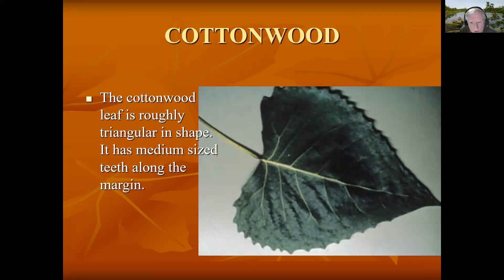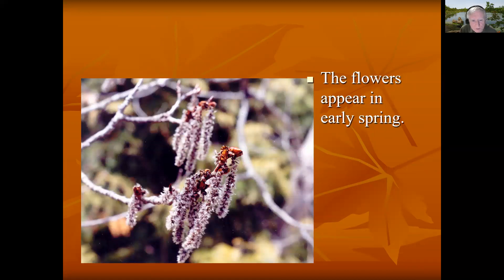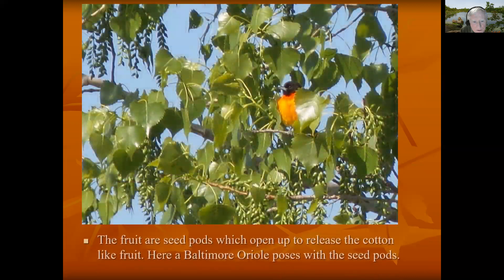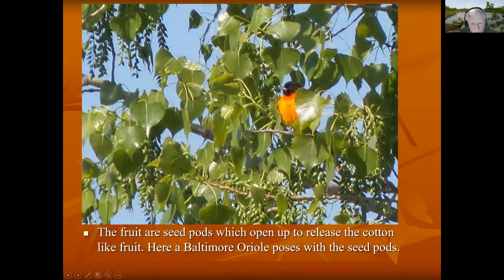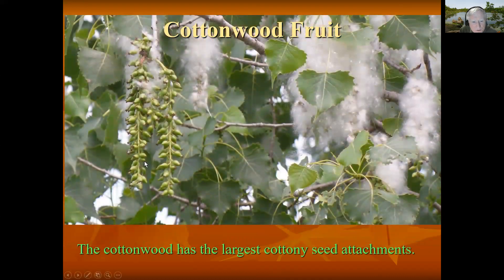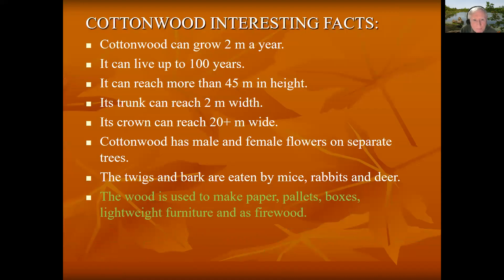Next we have a cottonwood — roughly triangular, medium-sized teeth, and fluffy flowers. You can see some of the fruit pods, very similar to other aspens. Hiding in the tree is also a Baltimore Oriole. On one side is the unopened fruit, and on the other side it is open with the fluffy portion capable of carrying the seed away. Interesting facts about the cottonwood: the wood is used to make paper, pallets, boxes, lightweight furniture, and as firewood.